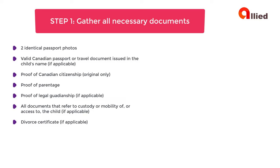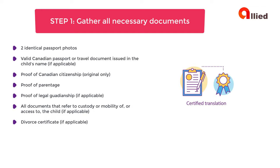You need to submit proof of legal guardianship, if applicable. If you're a legal guardian applying for a child's passport, make sure all other legal guardians participate in the application and you submit proof of legal guardianship. When a court order or agreement exists referring to custody of the child, only the person with custodial rights may apply. If parents have joint custody, either parent may apply. You must provide all documents that refer to custody, mobility of, or access to the child. If a divorce has been granted, you must also provide a copy of the divorce judgment or order. All documents must be submitted in either French or English. If a document is in another language, an official translation must be provided.